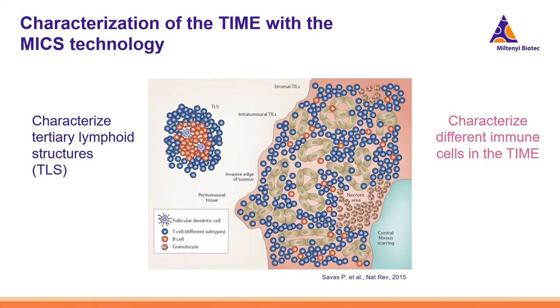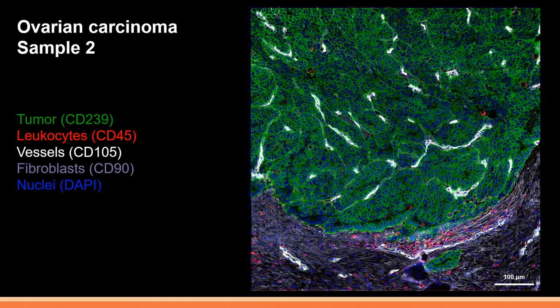Let's move to the next example, which includes many findings from recent years and proves the power of the technology — you can see all this great work done in the past just in one experiment. You will now see a second ovarian cancer sample where we have characterized the tumor immune microenvironment. As with the first sample, the tumor is depicted in green, leukocytes in red, vessels in white and nuclei in blue, and additionally fibroblasts are depicted in blue. It is immediately striking that the CD45 positive cells are mainly localized in the invasive margin of the tumor and not in the tumor core, suggesting this could be of the infiltrated excluded type.